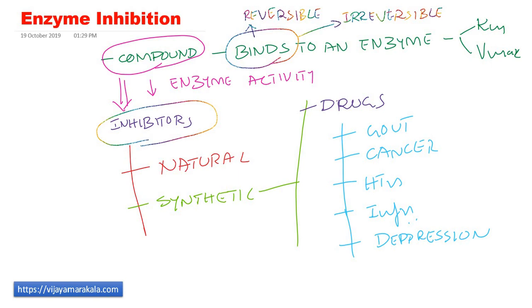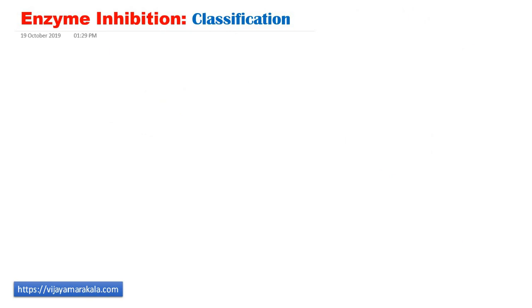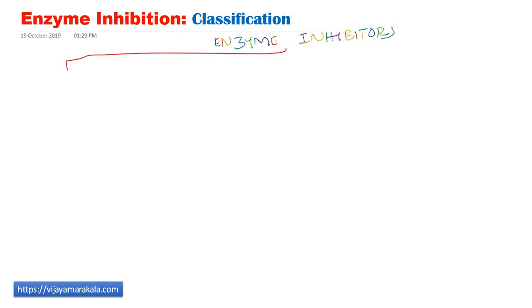We will study the classification of enzyme inhibition. The binding of inhibitors to the enzyme might be reversible or irreversible. Based on this, enzyme inhibitors are broadly classified into two types.